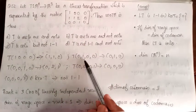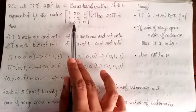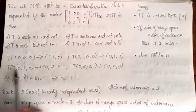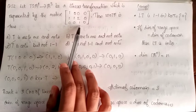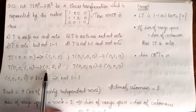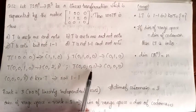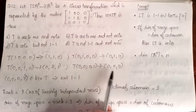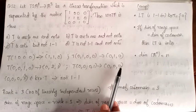So T of (1,0,0,0) maps to the first column: (1,1,0). T of (0,1,0,0) maps to the second column: (0,1,0). T of (0,0,1,0) maps to the third column: (0,2,1). T of (0,0,0,1) maps to the fourth column: (0,0,0). Now we find the kernel of T.